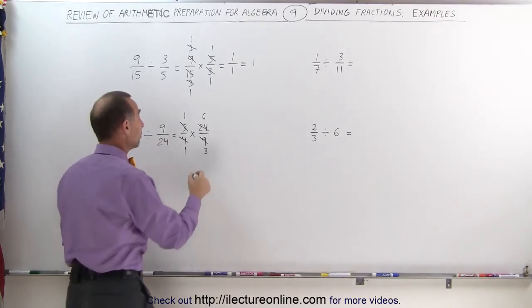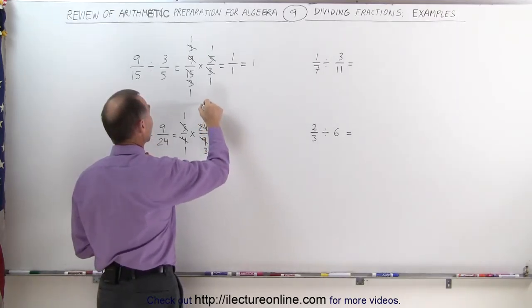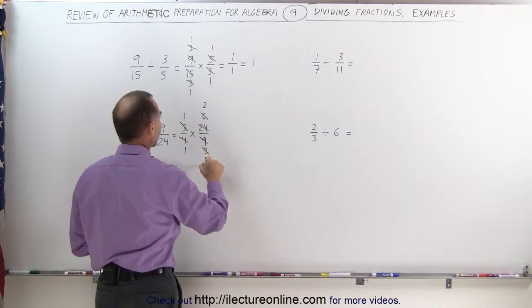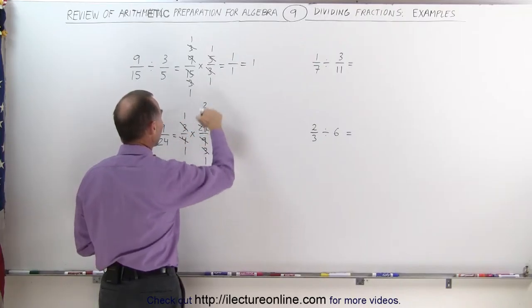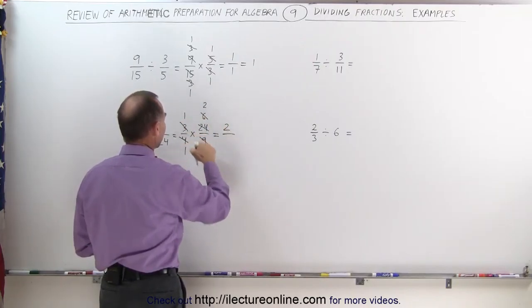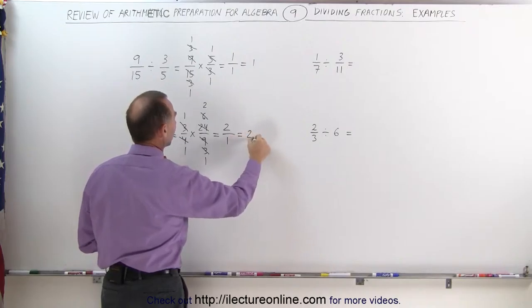Now you can see 6 and 3 can both be divided by 3. You can continue to simplify: 6 divided by 3 is 2, 3 divided by 3 is 1. Finally, you can say 1 times 2 divided by 1 times 1, which is equal to 2.